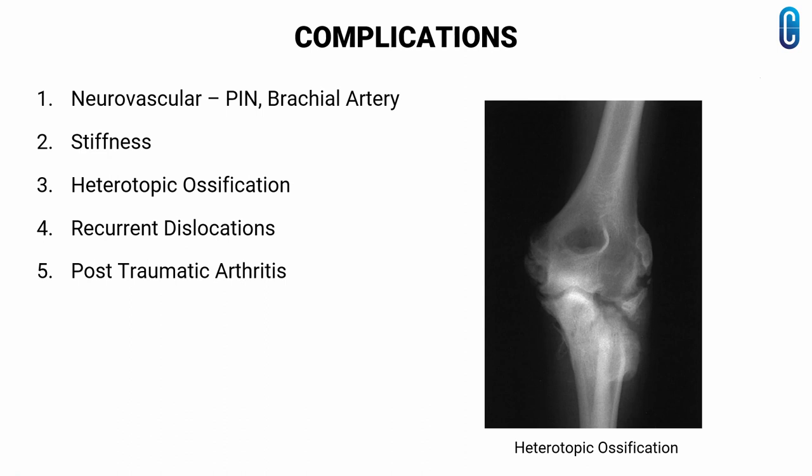Now we will see the complications of coronoid fracture. The fracture may be associated with neurovascular injury in the form of posterior interosseous nerve palsy, or dislocation and edema leading to brachial artery injury. Stiffness is another complication which could be overcome by early motion exercises. Heterotopic ossification, as shown here, is seen in some patients. Recurrent dislocations are also seen, and the primary way to prevent it is to ensure the elbow is stable following coronoid fracture. Also watch for post-traumatic arthritis.